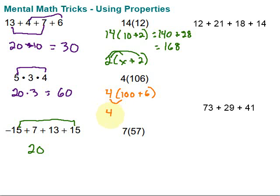4 times 100, 400. And then, 4 times 6 is 24. 400 plus 24, 424. Boom. There it is.